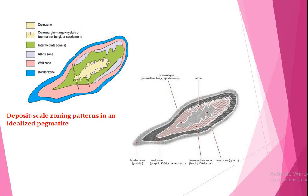This is the complex or zoned pegmatite in which there are border zone, wall zone, albite zone and intermediate zone, and core margin where large crystals of tourmaline, beryl and spodumene occur. This is the central, that is the core zone. This is the deposit-scale zoning pattern in an idealized pegmatite.